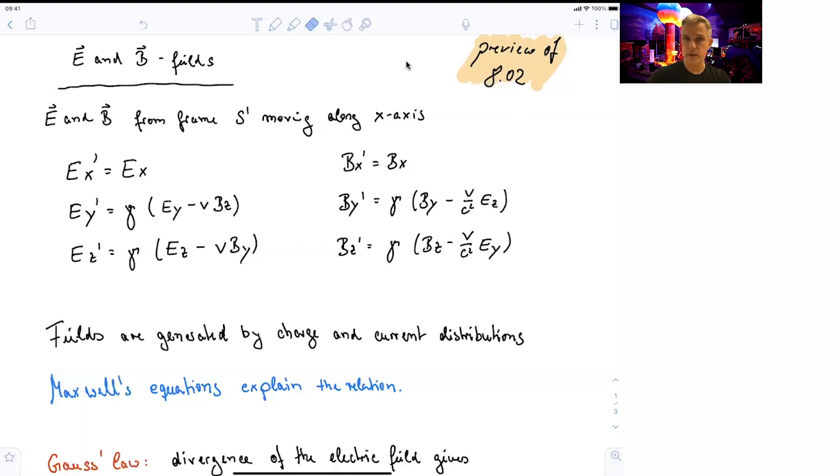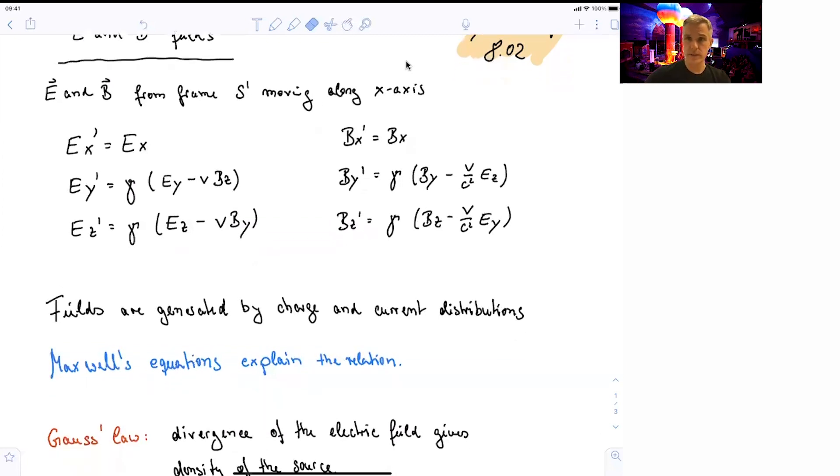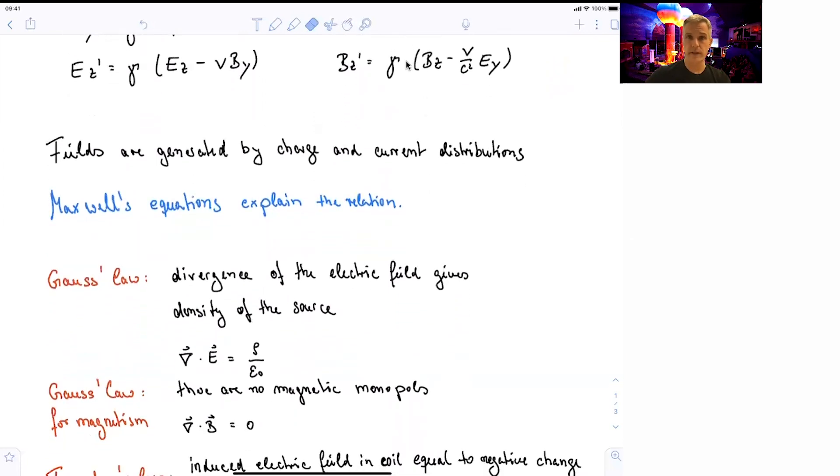But the core of this section is about how the fields, the electric and magnetic fields, are actually generated by charges in their current distribution. And thus, this relation is described by Maxwell equation. So the entirety of 802 of classes on electromagnetism is about how to understand Maxwell equation. So I'll do this here in a very short and brief manner.